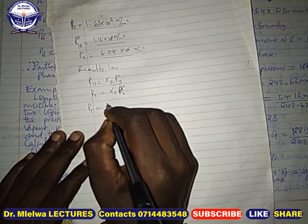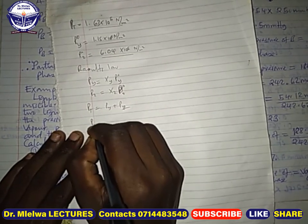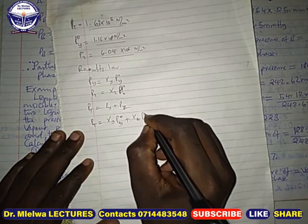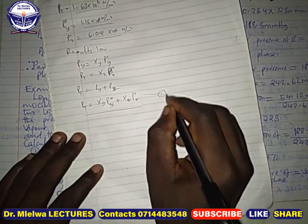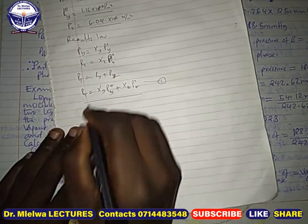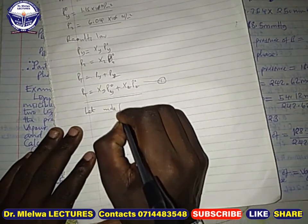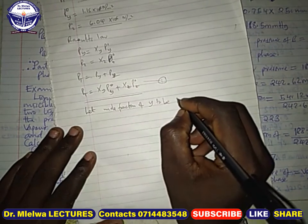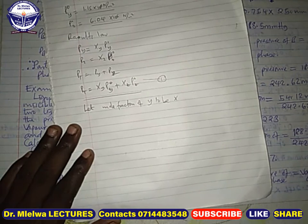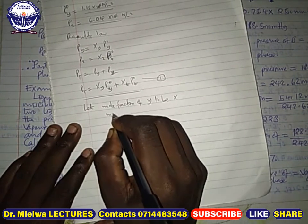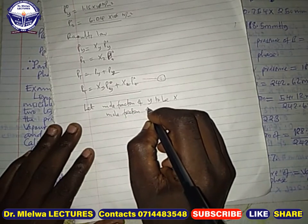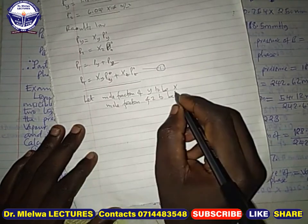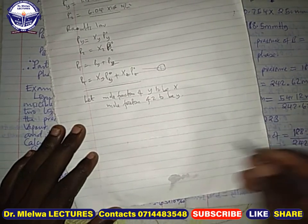From Raoult's Law, the total pressure equals P_Y plus P_Z, which means P_total equals (mole fraction of Y × P°_Y) plus (mole fraction of Z × P°_Z). Let's call this Equation 1. Now let's assign variables: let mole fraction of Y be x, and mole fraction of Z be y.